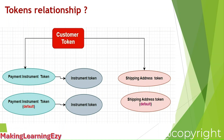So the hierarchy is: first the customer token, then the payment instrument token and shipping address token, and within the payment instrument token, the instrument token. In the CyberSource portal I will show the token.